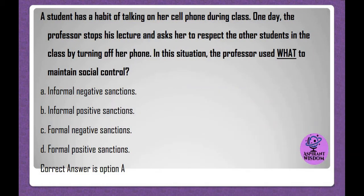A student has a habit of talking on her cell phone during class. One day, the professor stops his lecture and asks her to respect the other students in the class by turning off her phone. In this situation, the professor used what to maintain social control? A. Informal negative sanctions. B. Informal positive sanctions. C. Formal negative sanctions. D. Formal positive sanctions. Correct answer is option A.